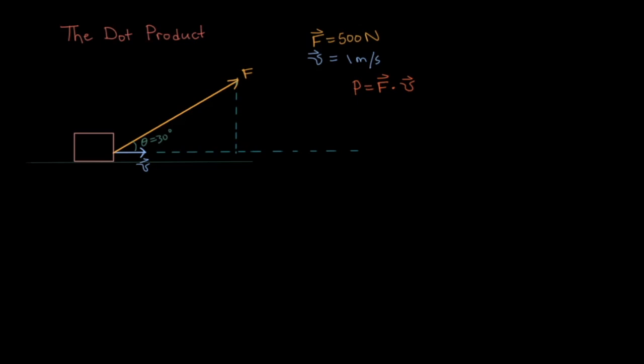Looking at the force, we see that it has both an x component and a y component. In this example, the y component of the force is completely useless to us in determining the power. We're only interested in the x component because that is the component that's parallel to v. With our understanding of the dot product, we can use this to solve for power.